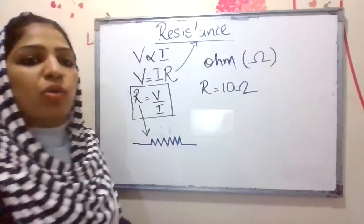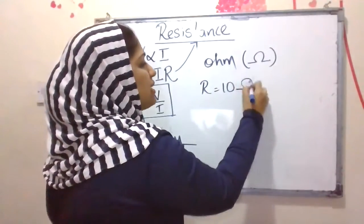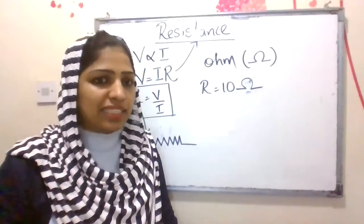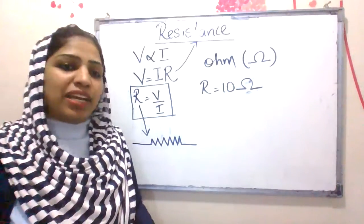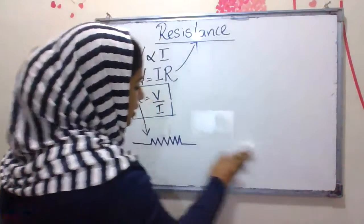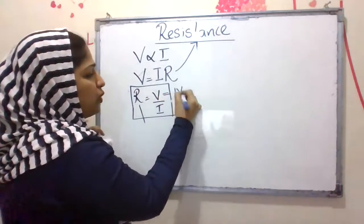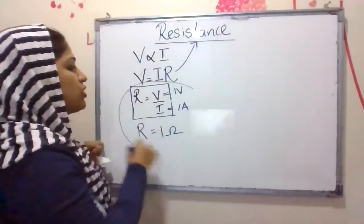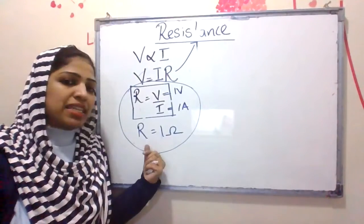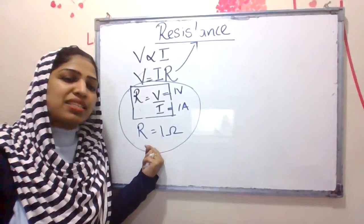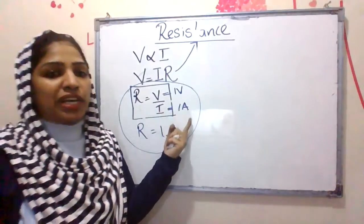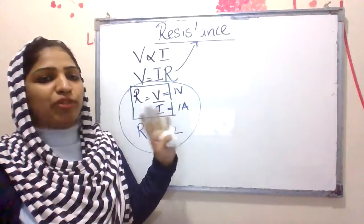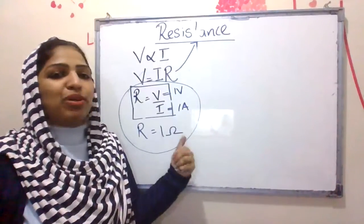If R is equal to 10, we read it as resistance equals 10 ohm. The SI unit is ohm, with symbol omega. The definition of 1 ohm: if V equals 1 volt and I equals 1 ampere, then R equals 1 ohm. So 1 ohm can be defined as the resistance of a conductor when 1 volt of potential is required for a flow of 1 ampere of current to pass through it.